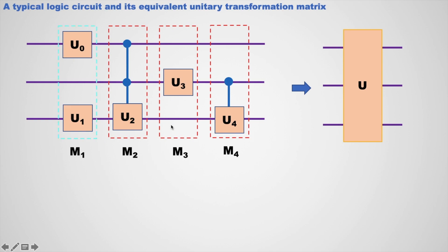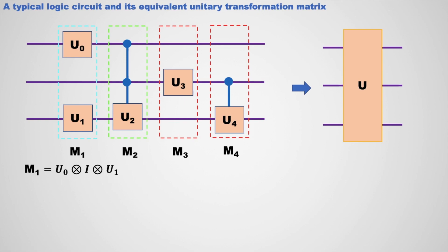Here I am explaining how you can calculate the equivalent matrix of this logical circuit. This first block is represented by M1 equals to U0 tensor I tensor U1, where U0 is a 2 by 2 operational matrix, I is the identity matrix, and U1 is also a 2 by 2 operational matrix. This second block is represented by M2, which is a controlled-controlled U2 gate — an 8 by 8 matrix.